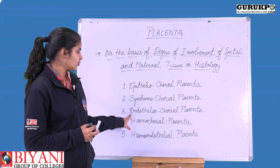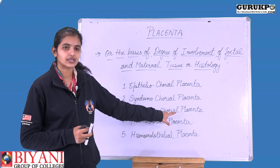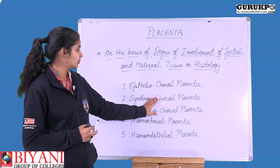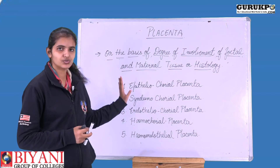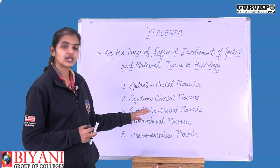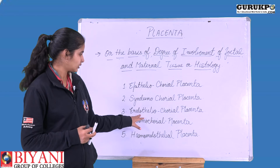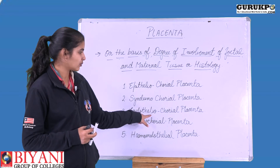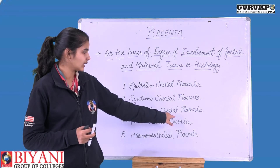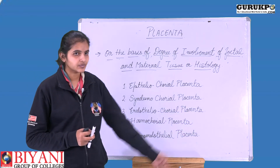Next is endotheliochorial placenta. Here, the connective tissue has also been eroded. The next layer is the endothelial layer. So now the endothelial layer, which is the mother's layer, is in contact with the chorial layer, which is the placenta's fetal layer.